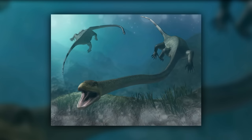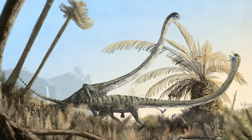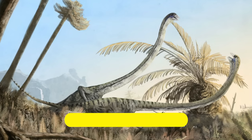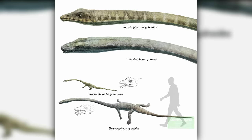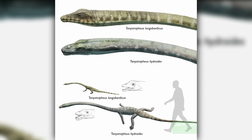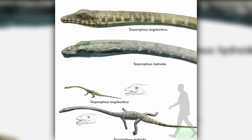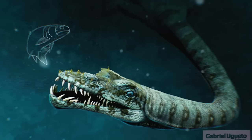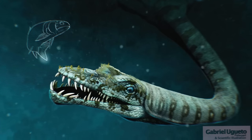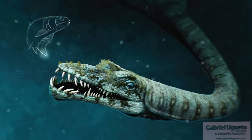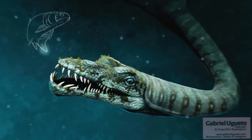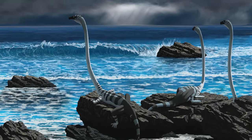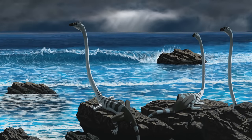The tail of Tanystropheus was also long, which may have aided in swimming. Its total body length is estimated to range from 1.5 to 6 meters, or 4.9 to 19.6 feet, depending on the species. Fossils have been found in Europe, the Middle East, China and North America, suggesting a wide geographic distribution. Despite the apparent vulnerability of its long neck to predation, Tanystropheus was evolutionarily successful, surviving for at least 10 million years. Its long neck allowed it to potentially ambush prey, although it also provided a clear target for predators.